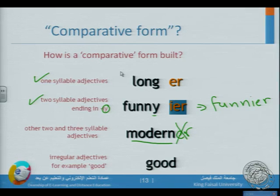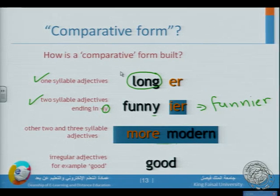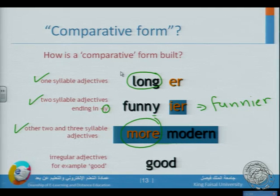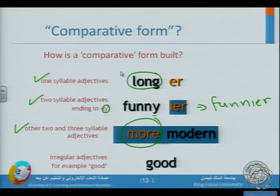So 'funny' becomes 'funnier.' Happy — فني فني — with two syllables, it becomes 'happier' with -IER. For words with more than two syllables, like 'modern,' you cannot add -ER (that would be wrong). Instead, you use 'more modern.'